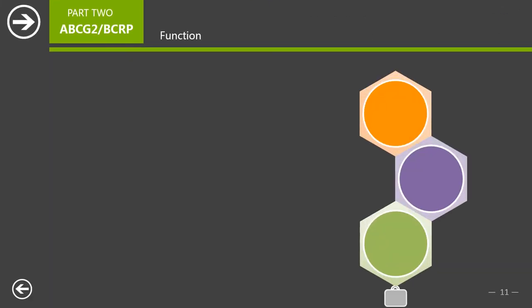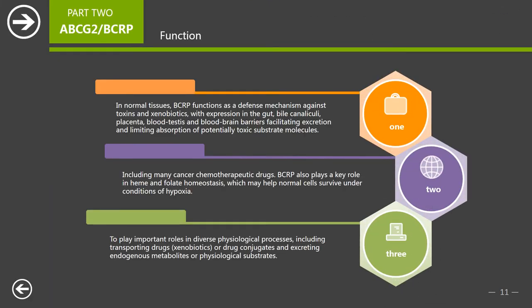In normal tissues, BCRP functions as a defense mechanism against toxins and xenobiotics, with expression in the gut, bile canaliculi, placenta, blood-testis and blood-brain barriers, facilitating excretion and limiting absorption of potentially toxic substrate molecules including many cancer chemotherapeutic drugs. BCRP also plays a key role in heme and folate homeostasis, which may help normal cells survive under conditions of hypoxia.